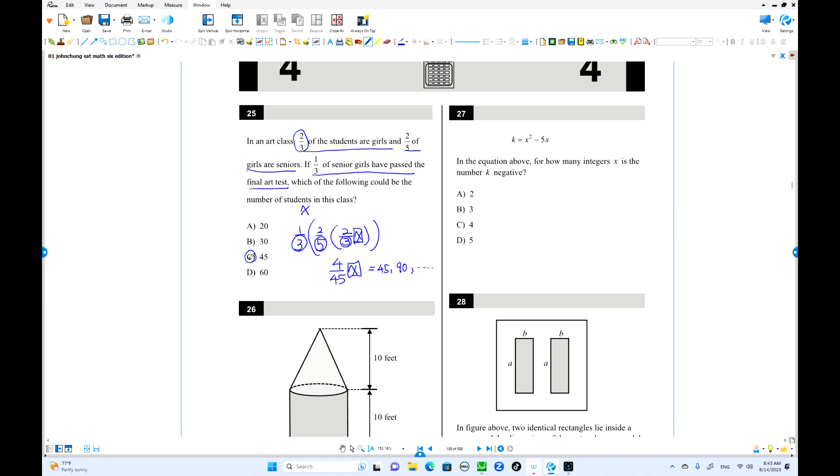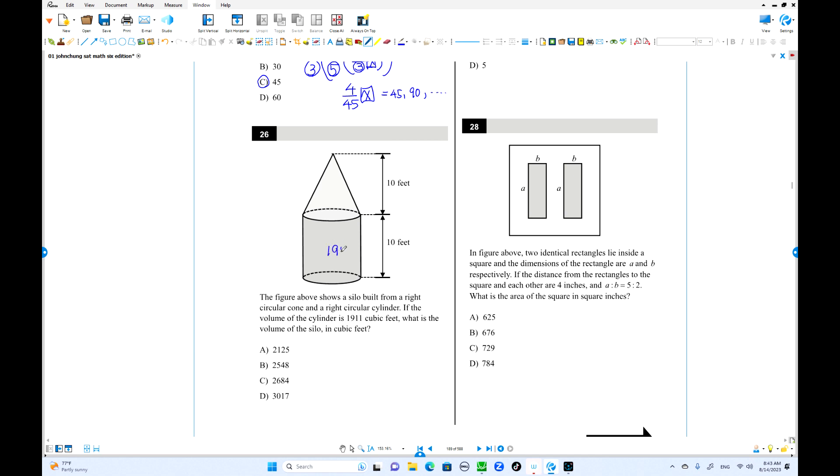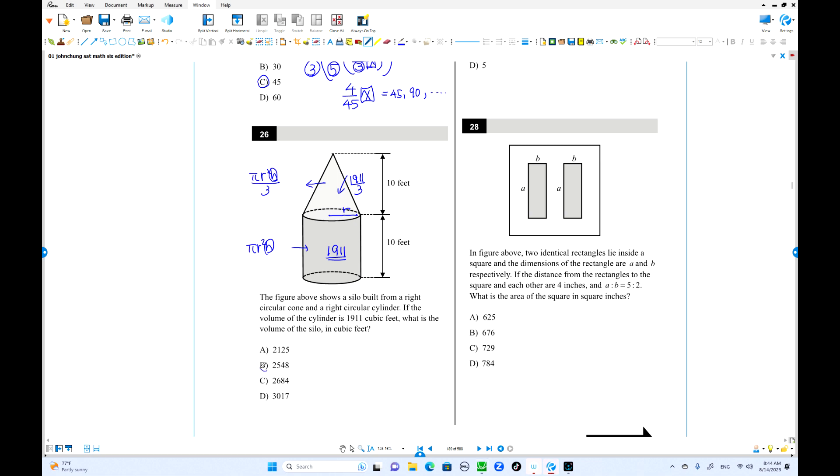Problem 26: A cylinder has volume 1911. What is the total volume including the cone on top? The cone has the same radius and height, so its volume is one-third of the cylinder: pi r squared h divided by 3. So 1911 divided by 3 for the cone, plus 1911 for the cylinder, equals 2548.